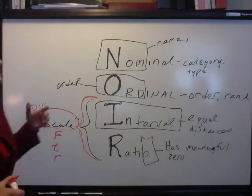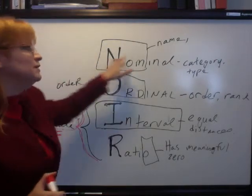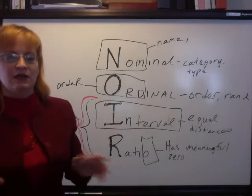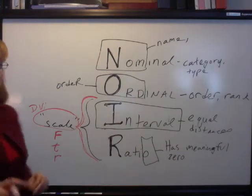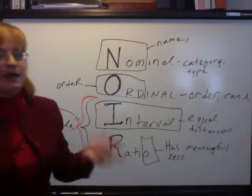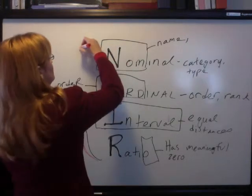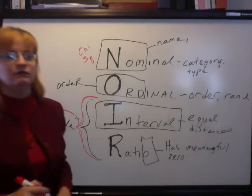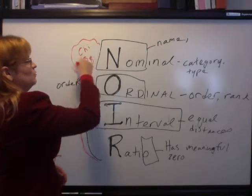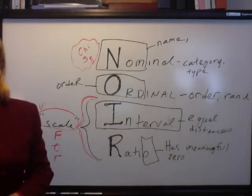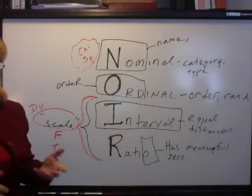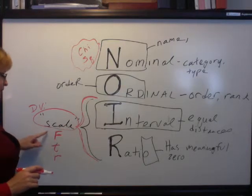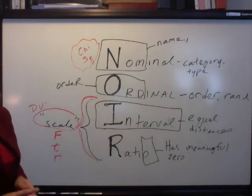In contrast, there may be studies where your dependent variable is nominal — apples, oranges, peaches, pears. That's fine, but you can't run these kinds of tests. You would need to run, for example, a couple kinds of chi-square tests, which we'll cover later. Just know your DV has to be a scale variable if you're going to run F, T, or R on it.